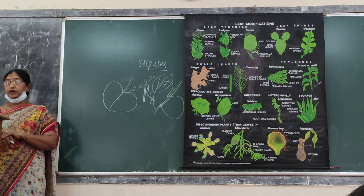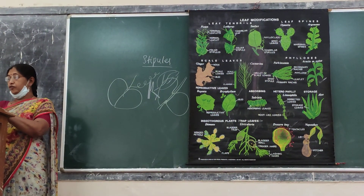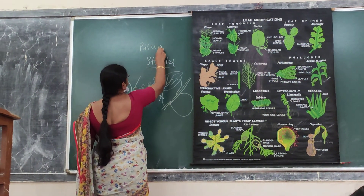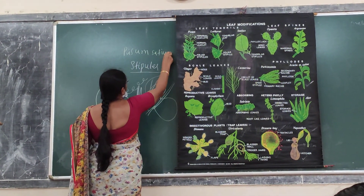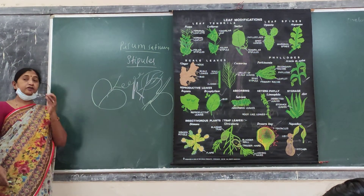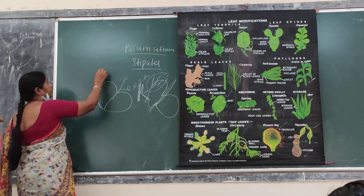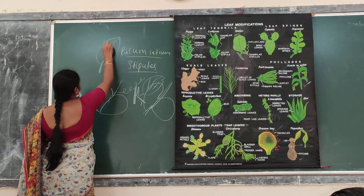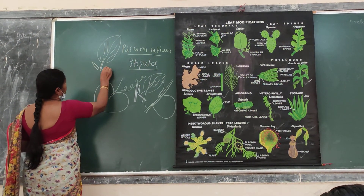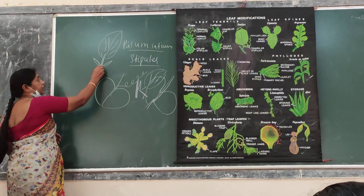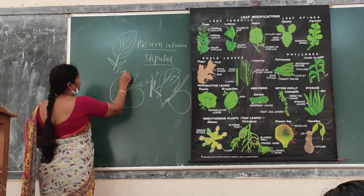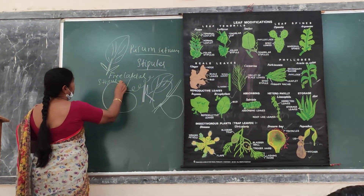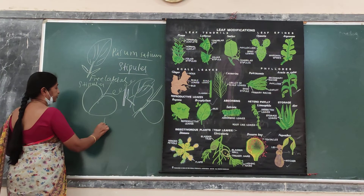Stipules are classified into different types. Foliaceous stipules are one such type. Next, in case of hibiscus, you will find free lateral stipules. If you observe the leaf of the hibiscus plant, at the base of the petiole you will find two leafy outgrowths. Those are called free lateral stipules, observed in case of hibiscus.